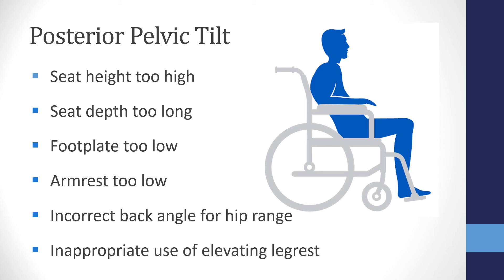Another useful way to get the message across about how important correct chair measurements and setup is, is to look at the different postural challenges and how they might be impacted by chair measurements and setup. First, we have a posterior pelvic tilt. Extrinsically, this can be caused by seat height being too high, the footrest being too low, the seat depth being too long, the armrest being too low, an incorrect back angle for the hip range of movement, and also inappropriate use of the elevating leg rest. If the client doesn't have good range of movement at the knee, the elevating leg rest will pull the pelvis down and forward in the chair, creating a posterior pelvic tilt.